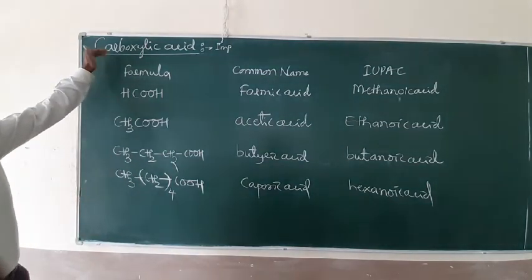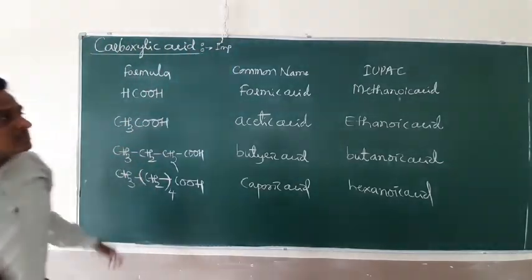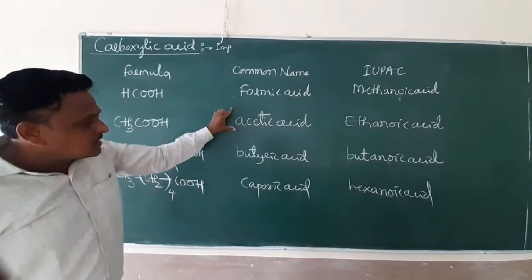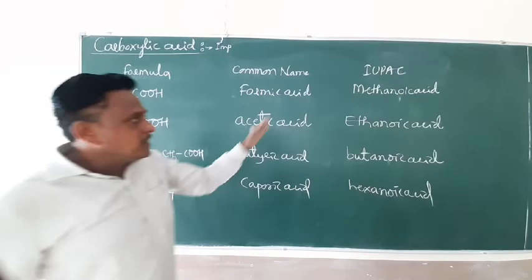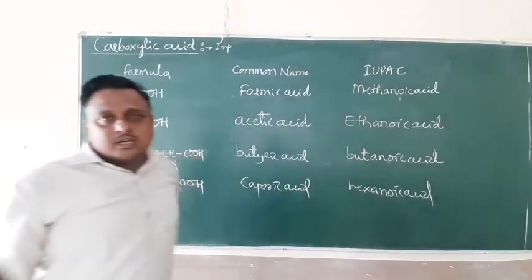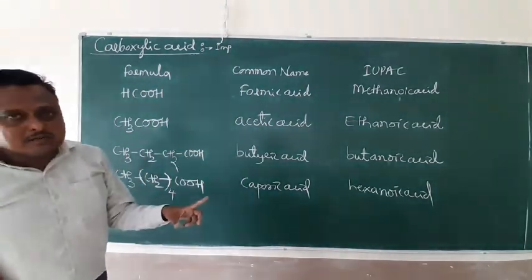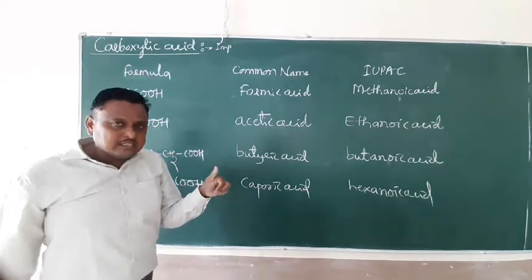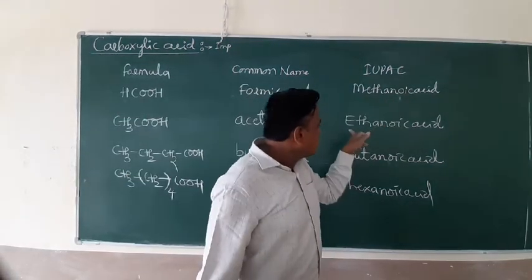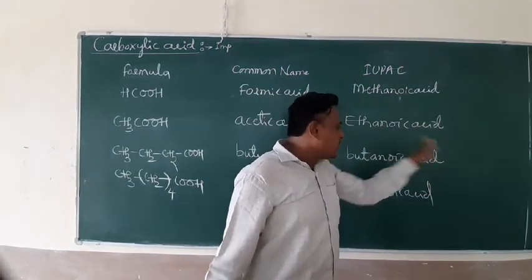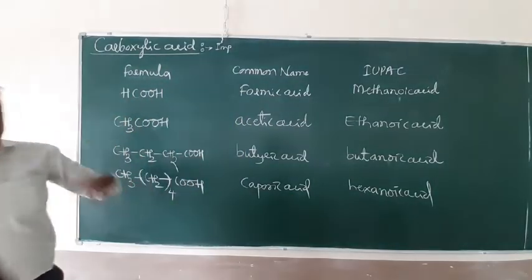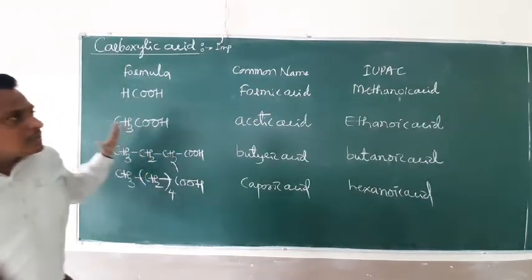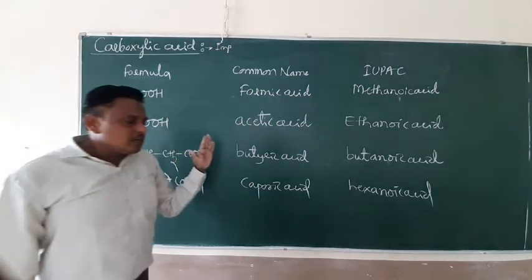Friends, once again, carboxylic acids are from plants and animals. And in common system, based on their source, we can mention formic acid, acetic acid, butyric acid, or caproic acid. But in IUPAC, they have termed alkanoic acid. Means alkane, the last letter E is replaced by OIC acid. Methanoic acid, ethanoic acid, propanoic acid, butanoic acid, hexanoic acid. And increasing carbon number, we can mention the nomenclature. This is a simple nomenclature part of carboxylic acid.